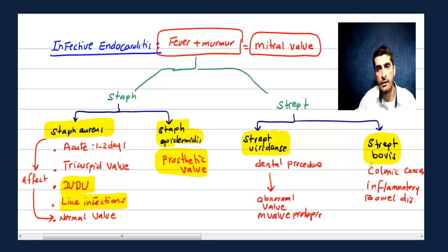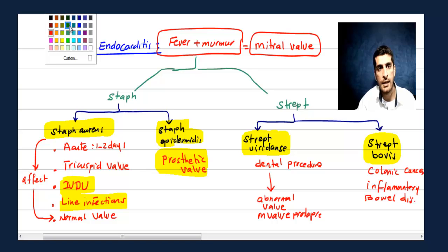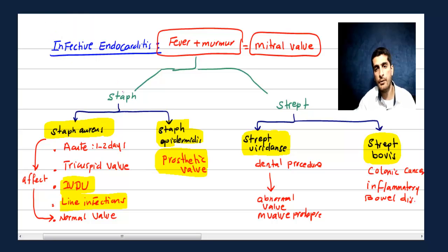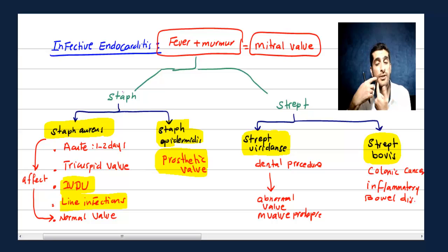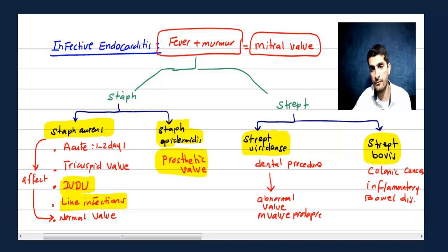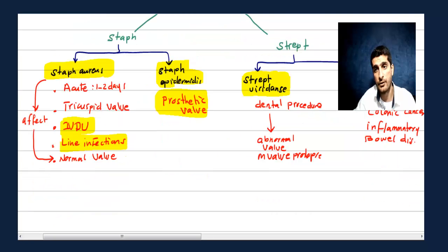To summarize the organisms: if I say Strep bovis, your answer is colonic cancer or inflammatory bowel disease. If I say Strep viridans, your answer is dental procedures. Staph epi means prosthetic valve. Staph aureus means IV drug abusers or line infections. We're done with the first part — the microorganisms — which is the most important part.